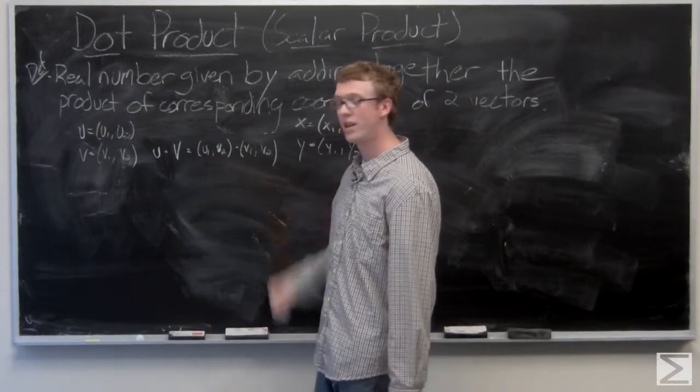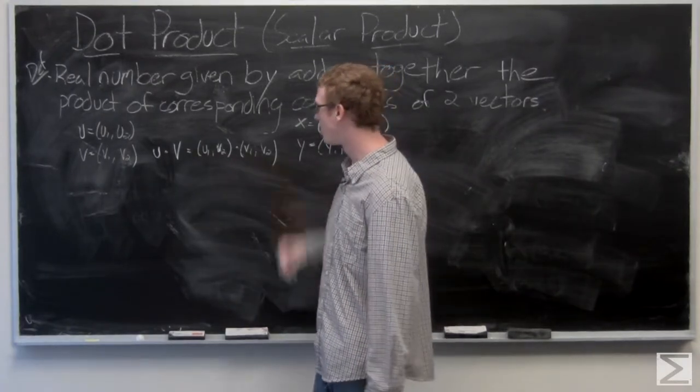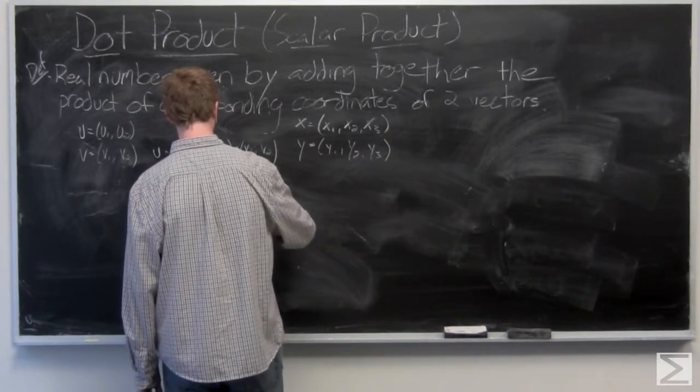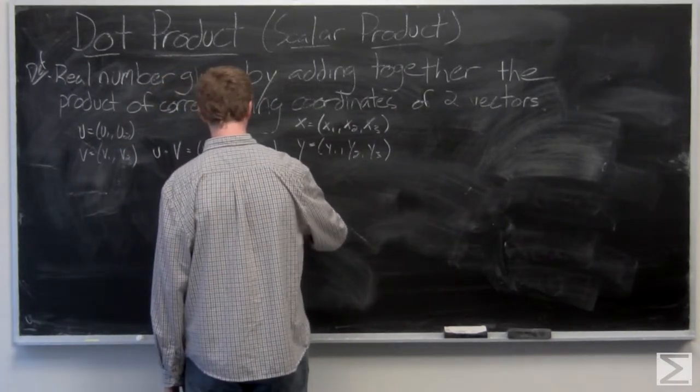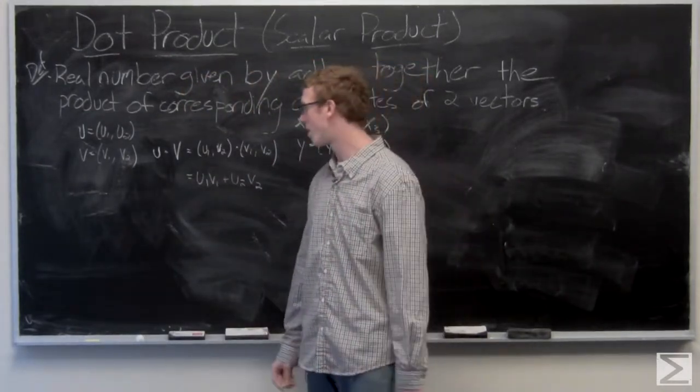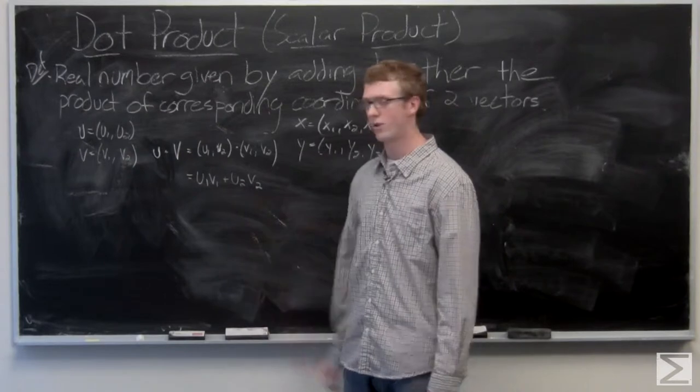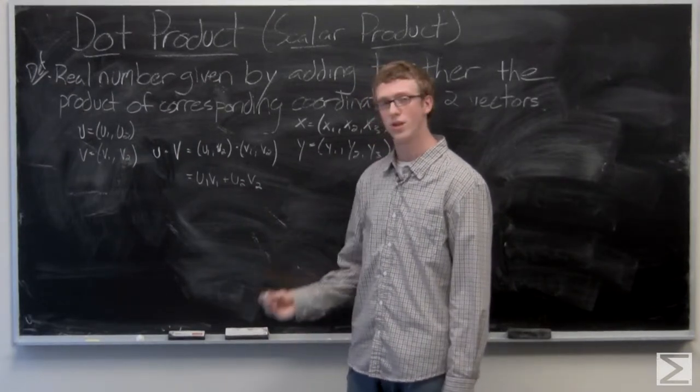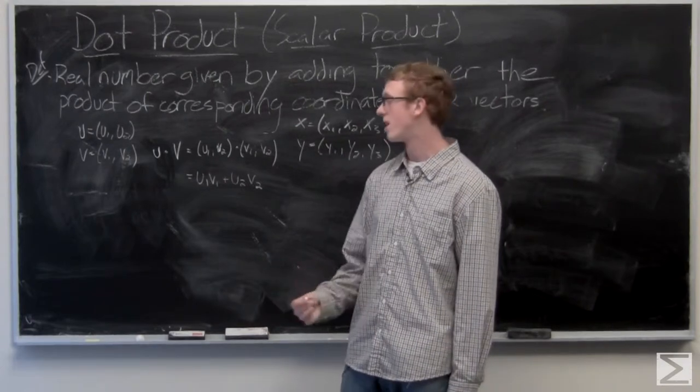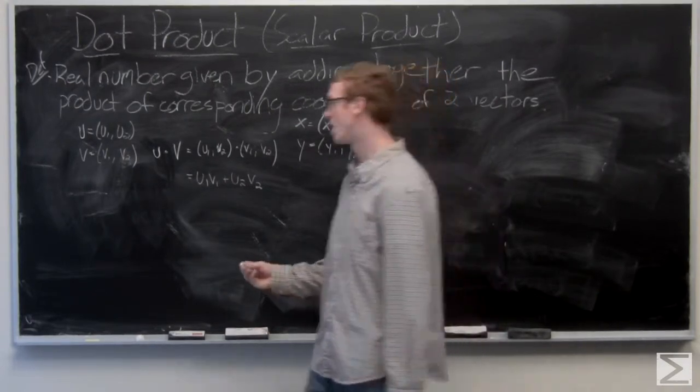Now an interesting result of this dot product is that this is also going to be the magnitude of u times the magnitude of v times the cosine of theta, with theta being the angle between the two vectors.